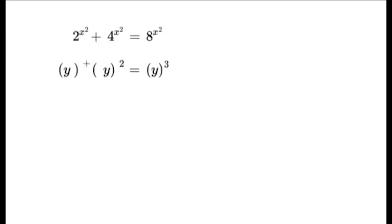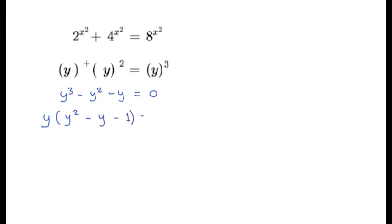Keeping y cubed positive, we rewrite this as y cubed minus y squared minus y equals 0. We then factor out y, giving us y times the bracket y squared minus y minus 1 equals 0.